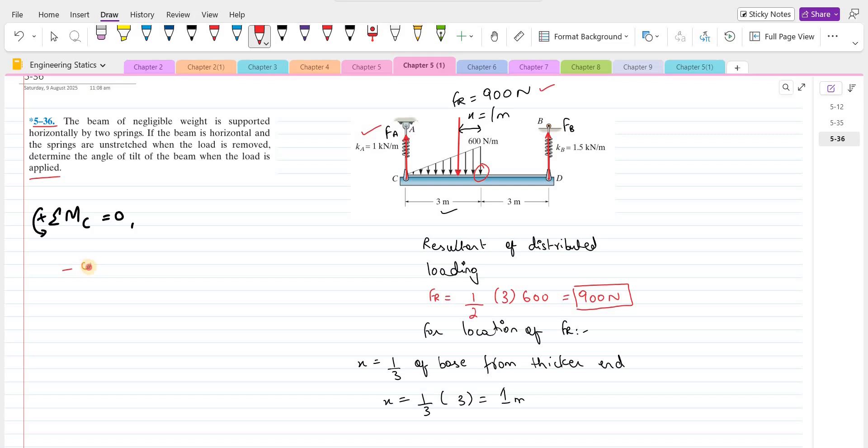So we have negative 900 and the moment arm is this distance, which is 2 meters. The force F B is trying to rotate the beam in counterclockwise direction about the point C. So the moment produced by this F B force will be taken as positive.